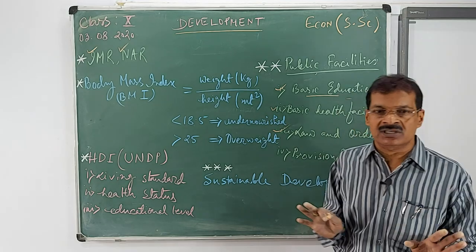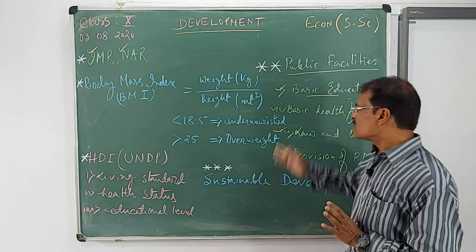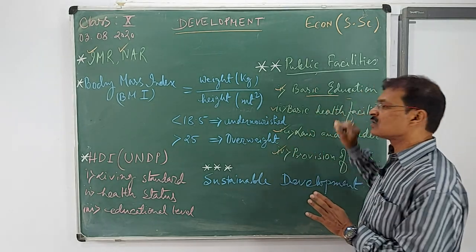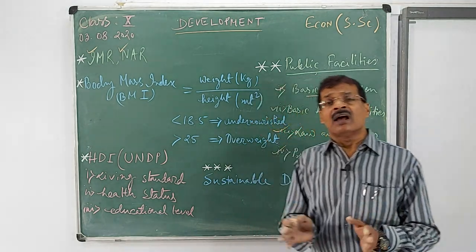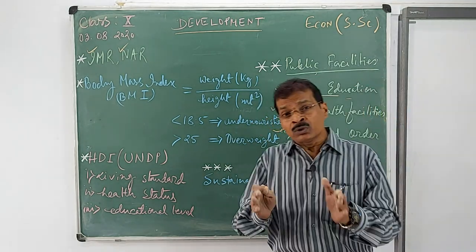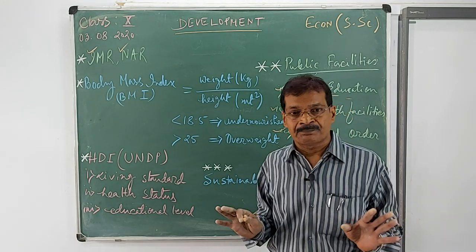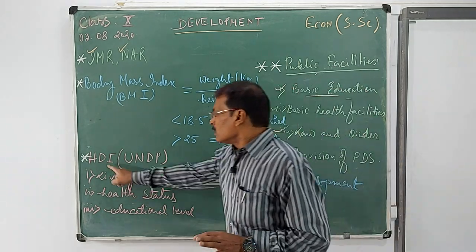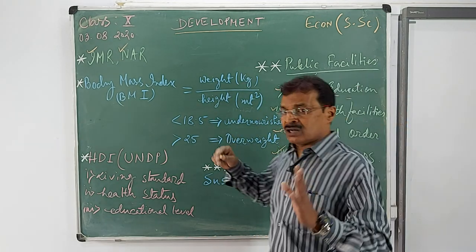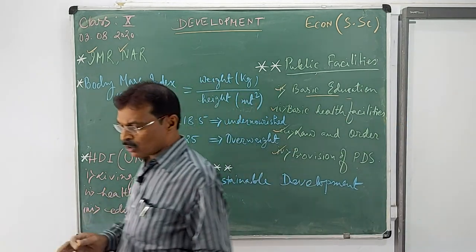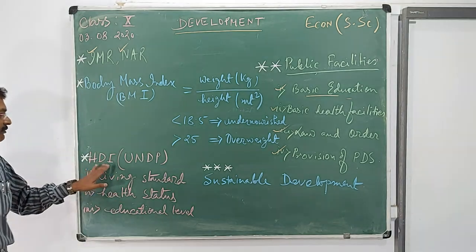And mostly it is reaching to the remote corner of the country through the fair price shops or the ration shops. We are very much aware of this fact. So these four are the public facilities which we could have in our life and which will make our future comfortable.